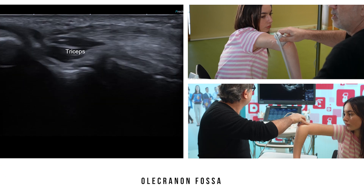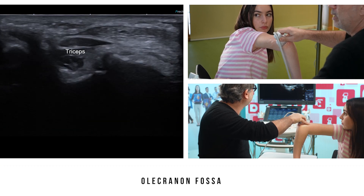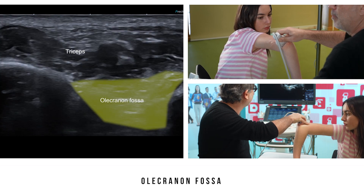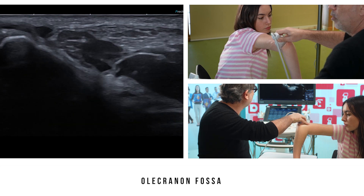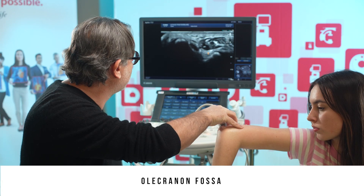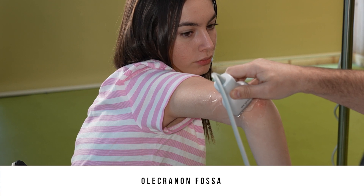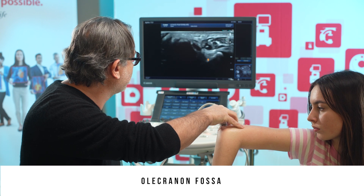Under the triceps brachii, we can see the olecranon fossa, which is mostly filled with fatty tissue that appears hyperechoic. In some cases, you might see this olecranon fatty tissue move a bit because of effusion — this can be a sign of joint pathology or of an occult fracture at the bony surfaces of the posterior fossa of the elbow.